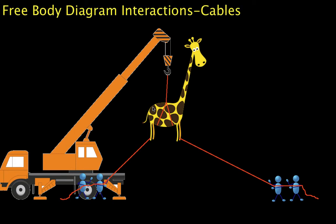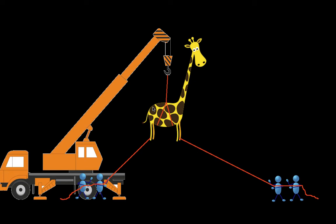Welcome to this video in which we show how to represent forces that interact with a free body when those forces are supplied by cables or wires or something like that. So we have here a picture of a giraffe being raised. It's being suspended from a cable and on two of its legs it's got cables attached so that people can move it around I guess.